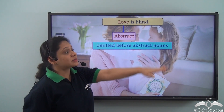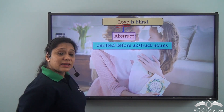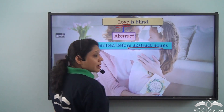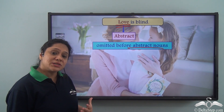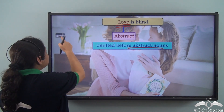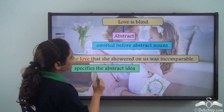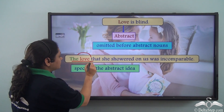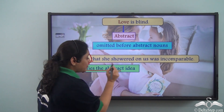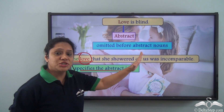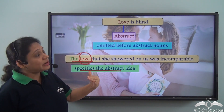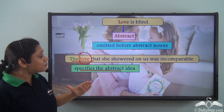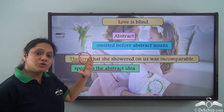In 'Love is blind,' 'love' is an abstract noun and no article is used before it, showing that articles can be omitted before abstract nouns. However, if we say 'The love that she showered on us was incomparable,' we are specifying the abstract noun, so the definite article is used. Generally, you can omit the article before an abstract noun, but if you are specifying the abstract idea, you need to use an article.